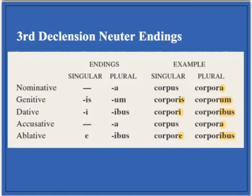When declining neuter endings, it's important to remember a few things. First of all, you have to remember the neuter law. The neuter law is that the nominative and accusative of all neuter nouns, pronouns, and adjectives are the same.